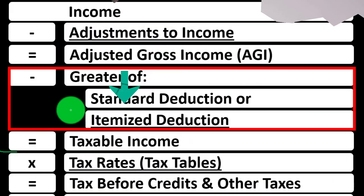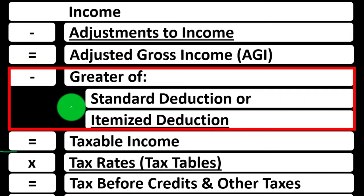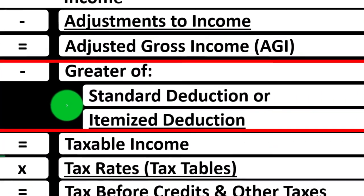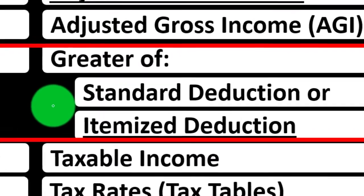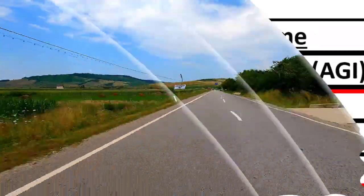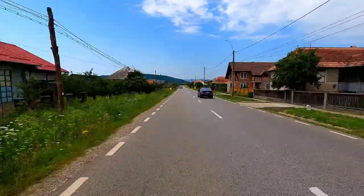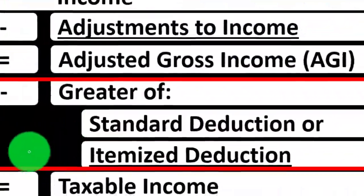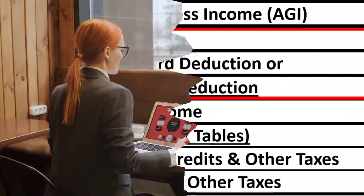Whenever we think about the itemized deductions, we always have to compare them to the standard deduction, because the only time we would take the itemized deduction is if it was higher than the standard deduction. Because with taxes, everything is reversed — we want to look bad, we want the taxable income to be low.